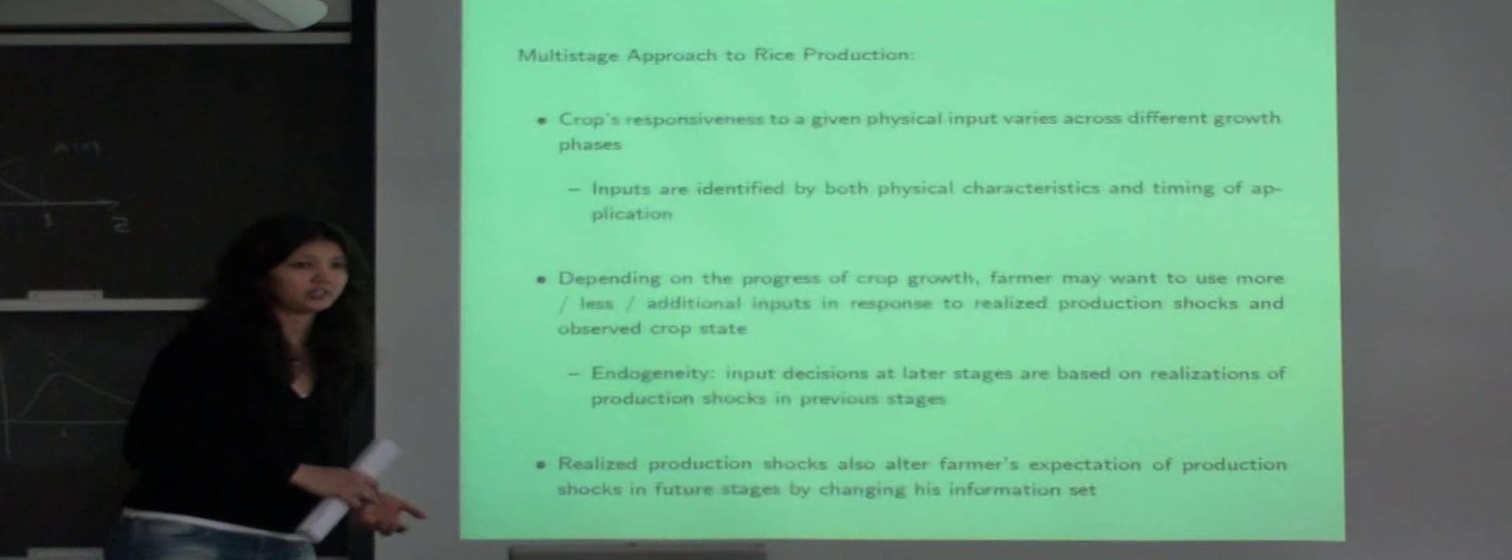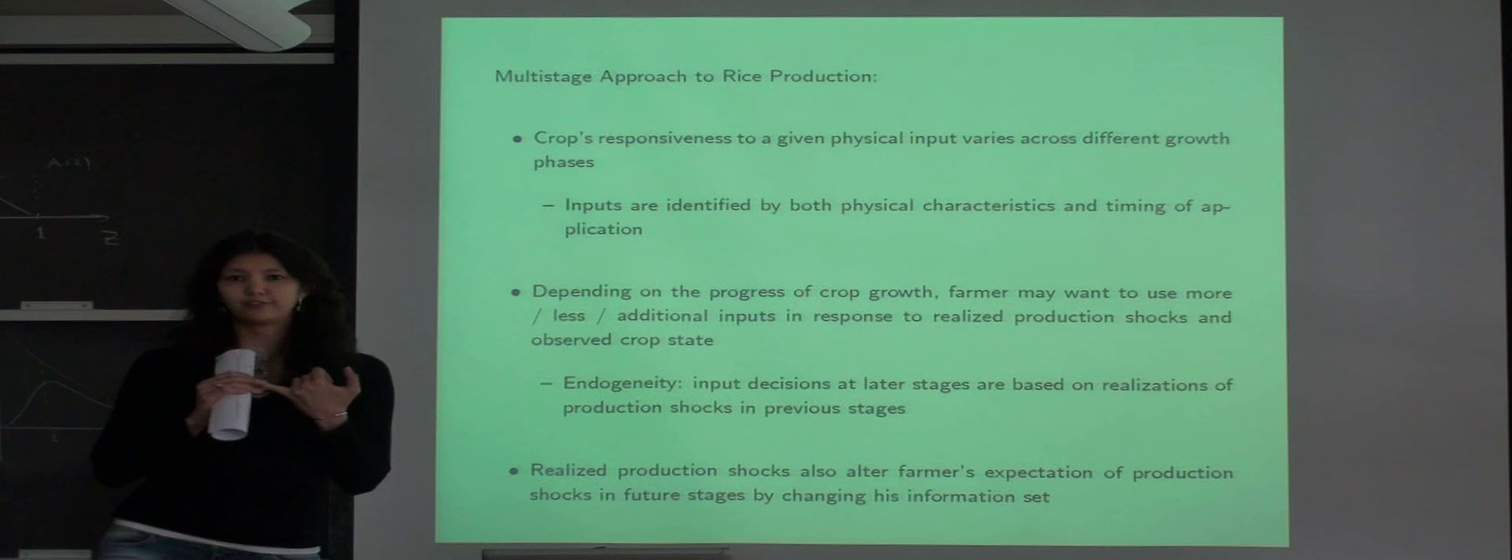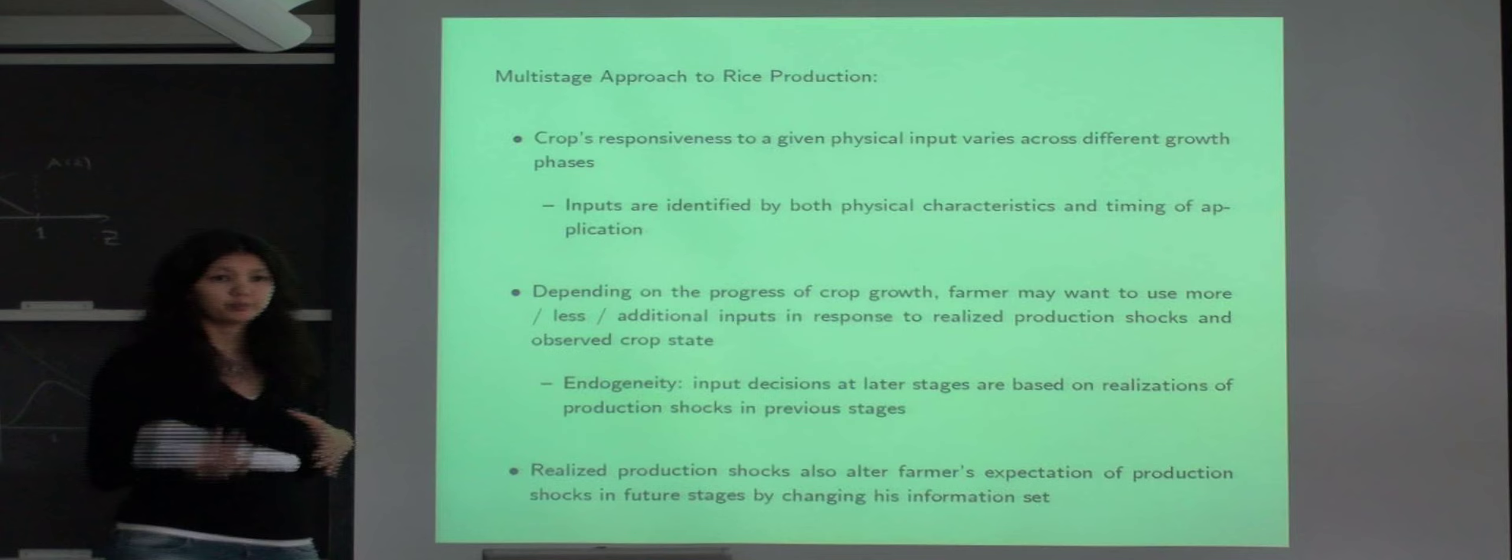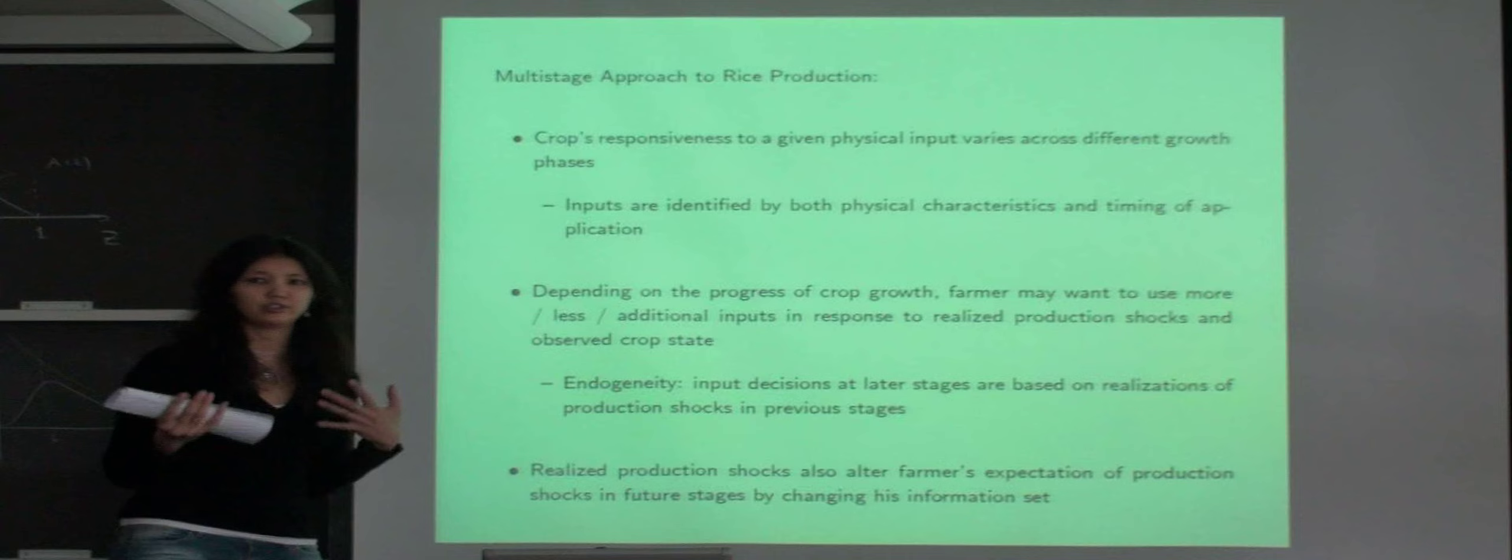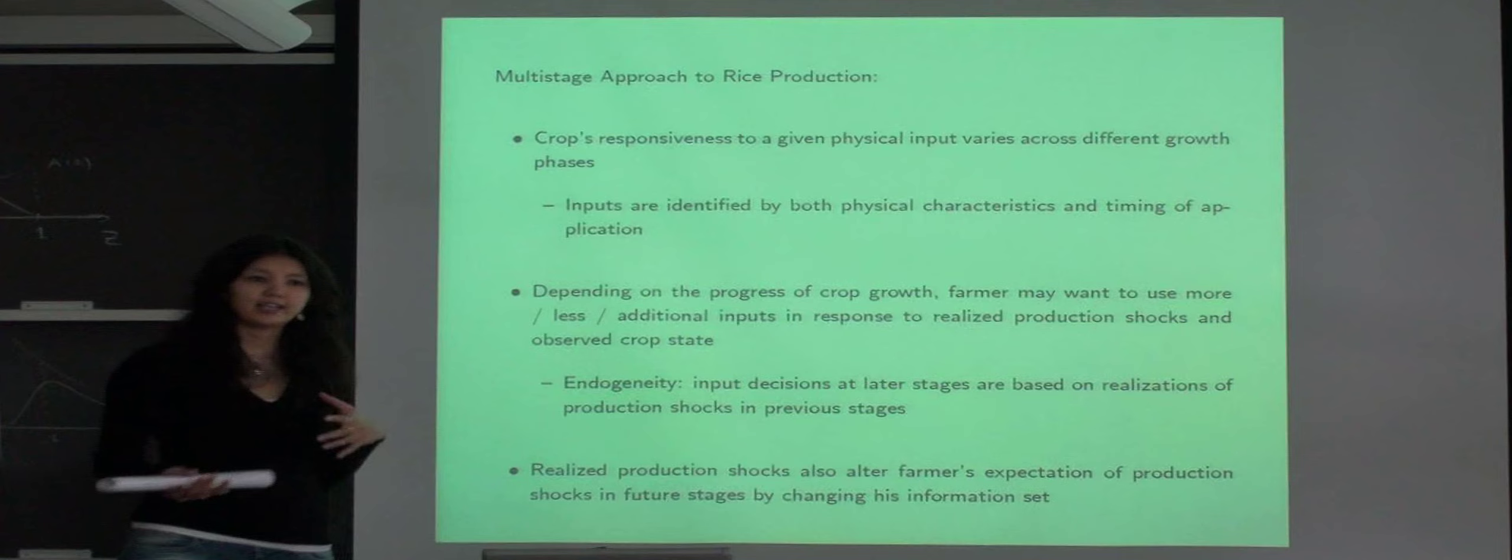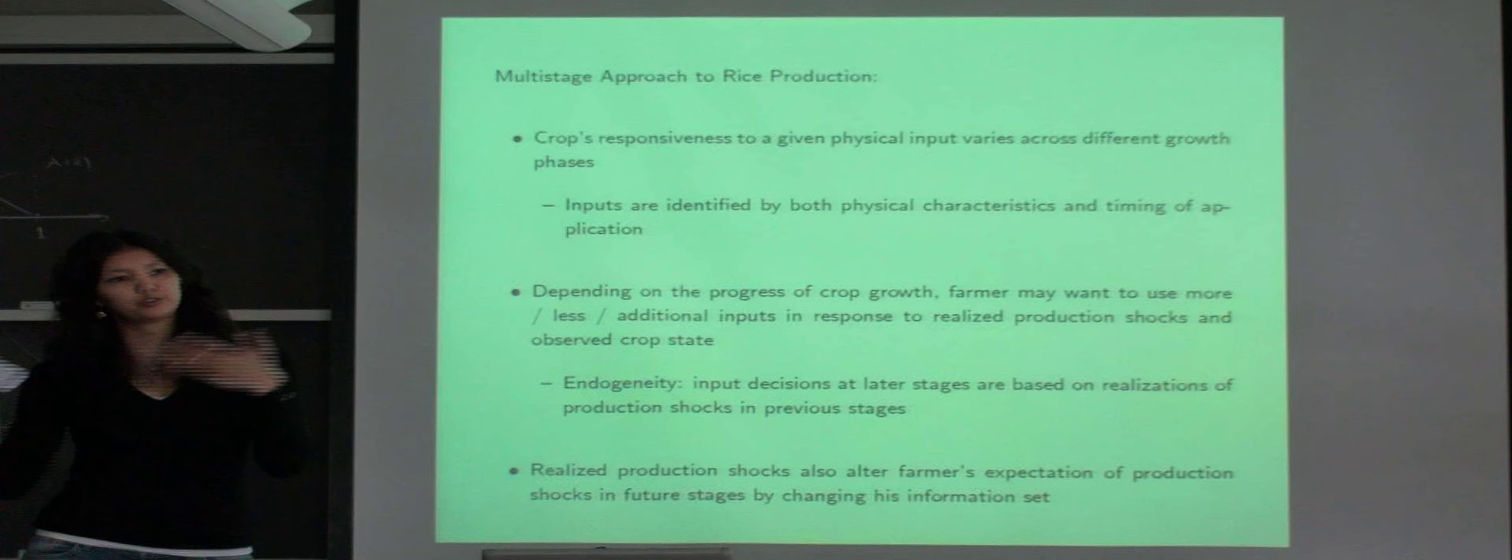Inputs into crop cultivation are characterized not only by their physical qualities but also by the timing of application. Farmers' input decisions later in the crop cultivation process are made in response to production shocks realized earlier in the process. So this gives rise to endogeneity. Production shocks realized earlier in the cultivation process update farmers' information set and update their expectations of future production shocks later in the stage.